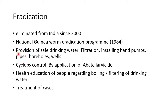The following things were done for eradication of dracunculiasis: provision of safe drinking water by filtration, installing hand pumps, pipes, boreholes and wells; Cyclops control was done by application of abate larvicide; health education was given to people regarding boiling and filtering of drinking water, and cases were treated properly so that Dracunculus medinensis was eliminated from India.